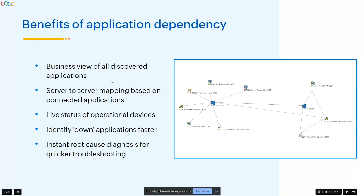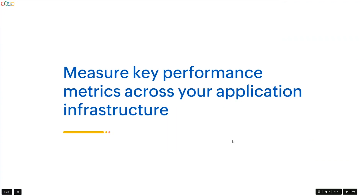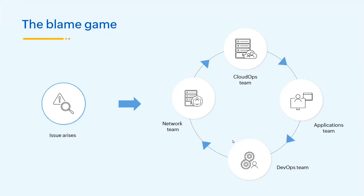That's it with the Discovery and Dependency Mapping feature. Let's move on to the next topic: measuring key performance metrics across your application infrastructure. What happens when an issue usually arises? You usually don't understand where it's coming from, and different teams point to each other. The CloudOps team might say the issue is with the Applications team, the Applications team might blame DevOps, and DevOps may point to the Network team — a cycle that never ends.